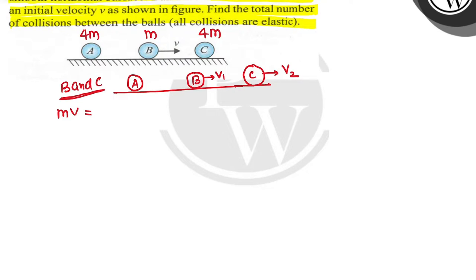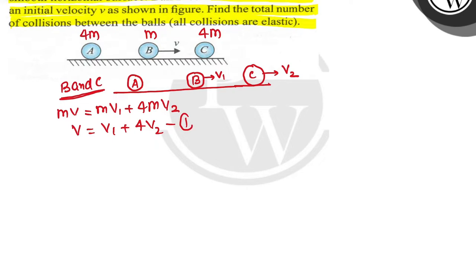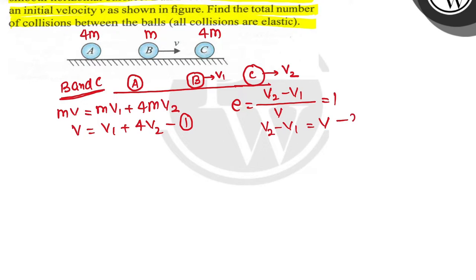Using conservation of momentum: MV = MV1 + 4MV2, so V = V1 + 4V2. This is equation number 1. For the coefficient of restitution with e=1 (elastic collision): relative velocity after divided by relative velocity before gives V2 minus V1 upon V. So V2 minus V1 = V. This is equation number 2.